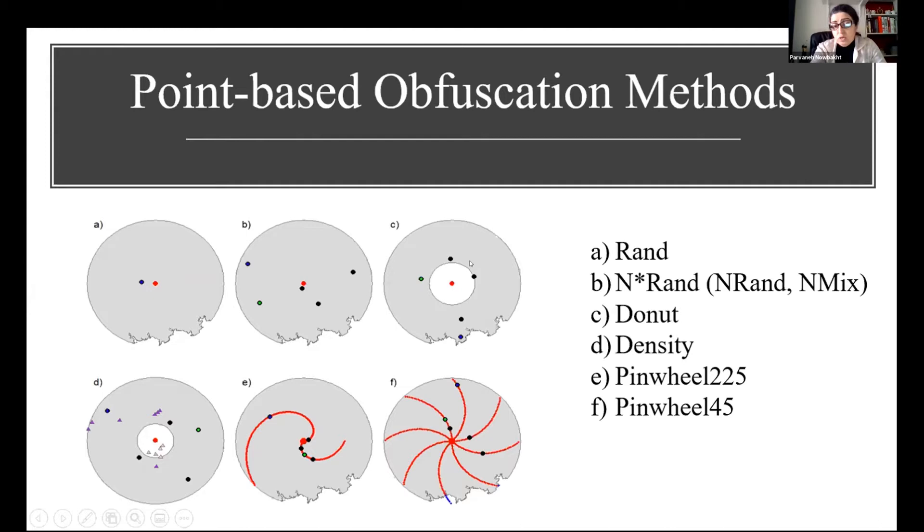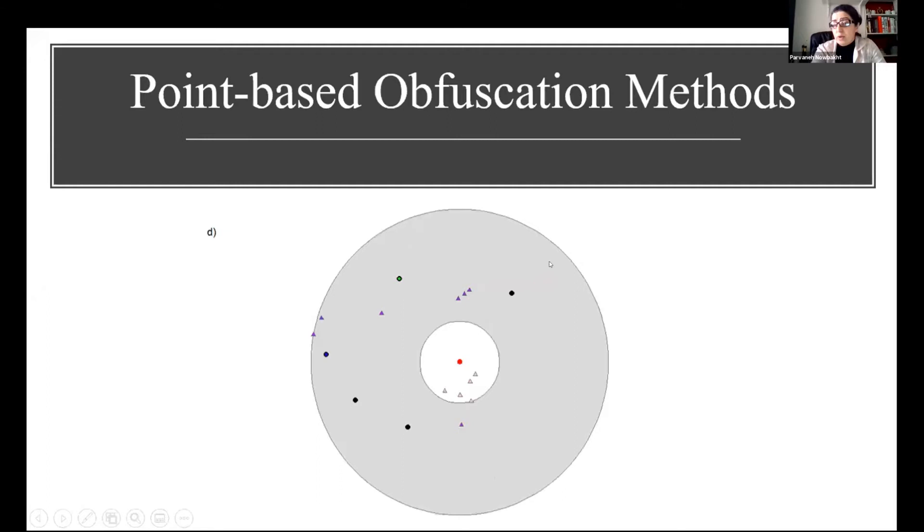The challenge in donut method is that the size of donut shape, meaning r minimum and r maximum, is constant for all points. But in density, this is different for different points depending on the local point density. The challenge is how to determine r minimum and r maximum in donut and density methods. I developed a qualitative algorithm to do this.